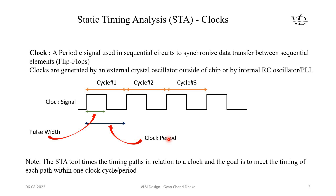An important point to note here is that the STA tool times the timing paths in relation to a clock. The delay for each and every timing path needs to meet the timing checks within one clock cycle period. We are going to cover all the synchronous timing checks — what they are, how the STA tool performs them, and what are the conditions for violations and for meeting timing — in our next chapters. For now, just remember that the STA tool times each and every timing path within one clock cycle period.